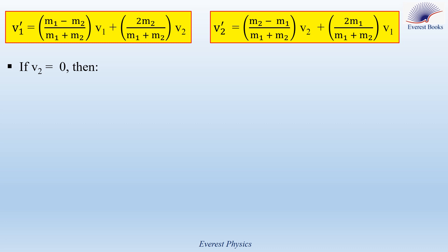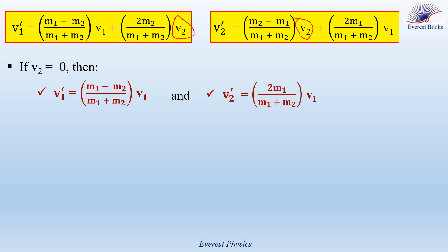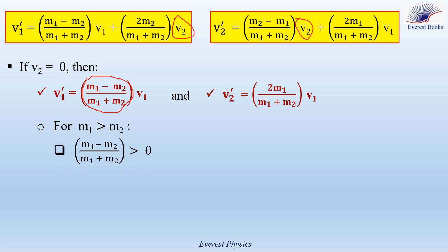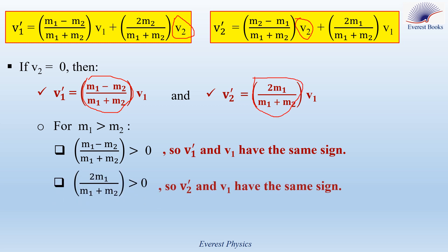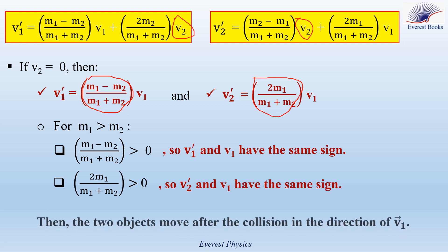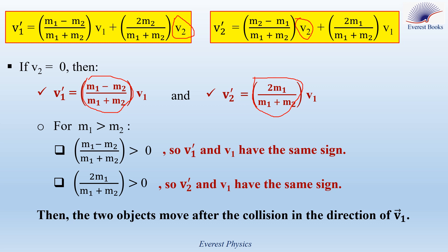Now, another particular case: V2 = 0 (second object initially at rest). The expressions simplify to V1' = [(M1 − M2)/(M1 + M2)]·V1 and V2' = [2·M1/(M1 + M2)]·V1. If M1 > M2, the term (M1 − M2)/(M1 + M2) is positive, so V1' and V1 have the same sign — the first object continues in its original direction. The term 2·M1/(M1 + M2) is always positive, so V2' has the same sign as V1, meaning the second object moves in the direction of V1. Both objects move in the direction of V1.